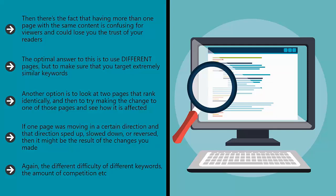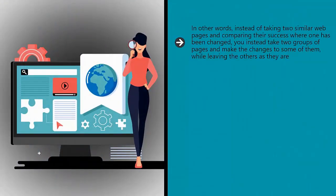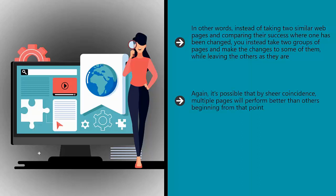The different difficulty of different keywords, the amount of competition, etc. can all impact on your results and potentially skew your findings. But while this might be seen as a problem, it can be mitigated somewhat by simply using as many pages as possible in your test. In other words, instead of taking two similar webpages and comparing their success where one has been changed, you instead take two groups of pages and make the changes to some of them while leaving the others as they are. It's possible that by sheer coincidence multiple pages will perform better than others beginning from that point, but that's when you use the statistical significance tests — compare the new and old ranking positions of those in group A to those in group B and then find out if the data suggests an effect.